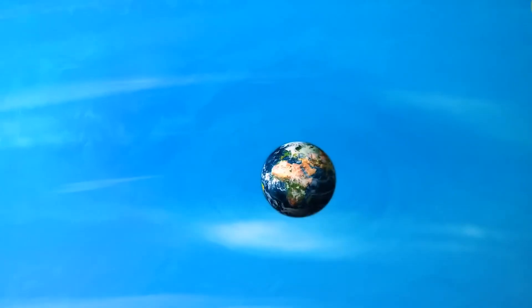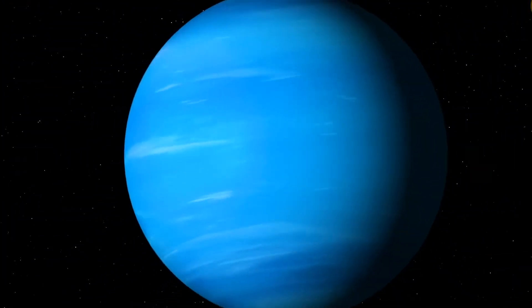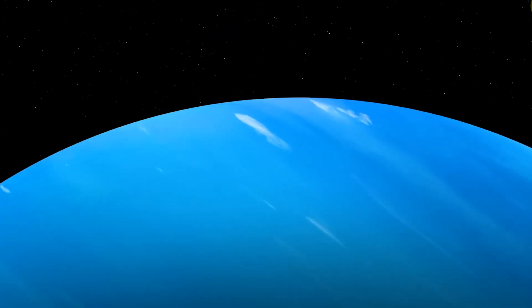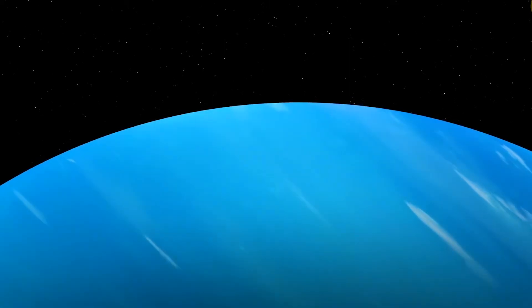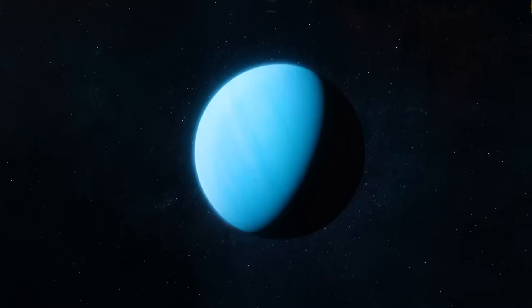Pressure and depth: The pressure increases rapidly as you descend into Neptune's atmosphere. For example, at a depth of about 100 kilometers below the cloud tops, the pressure is estimated to be around 10,000 bars (one million times Earth's sea level pressure). As you go even deeper, the pressure continues to increase significantly.